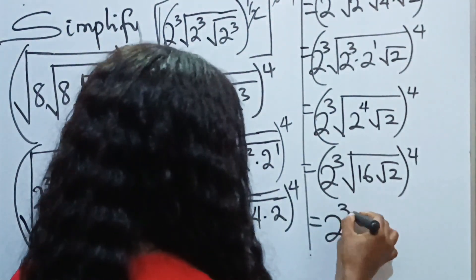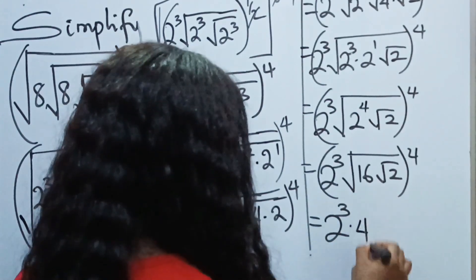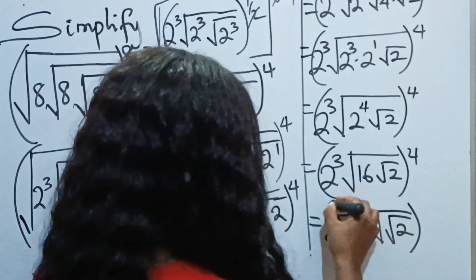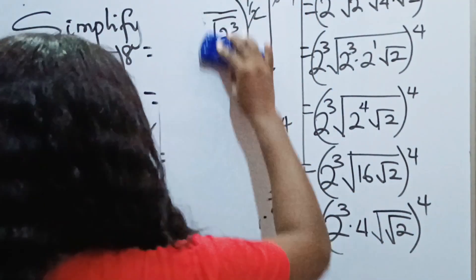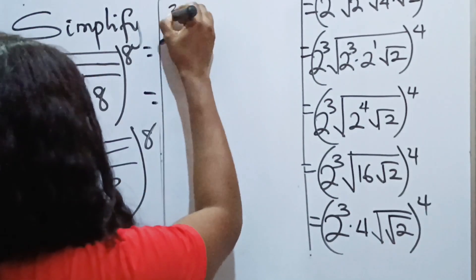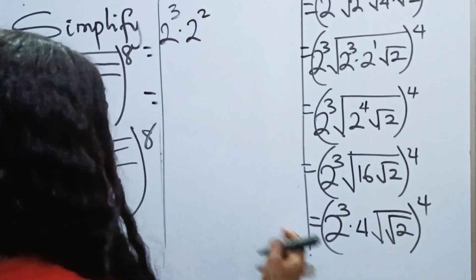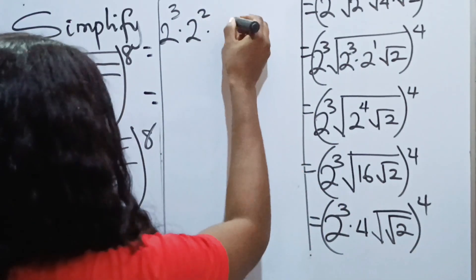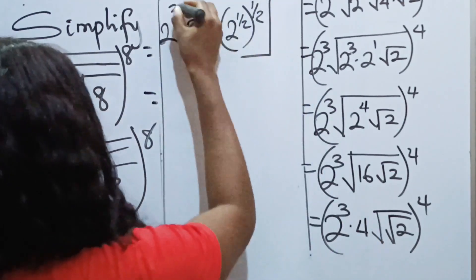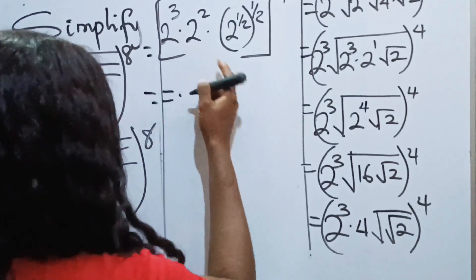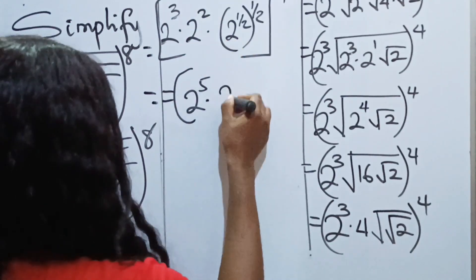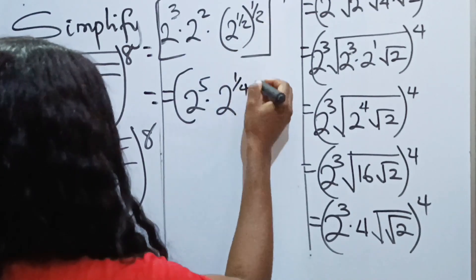Are you enjoying this class? So we have 2 to the power of 3 multiplied by 2 to the power of 2 — that's the square root of 16 simplified — then we have 2 to the power of one half raised to the power of one half, which is the square root of the square root of 2. That gives 2 to the power of one quarter. Then we have the same base, so we pick 2 and add the powers: 3 plus 2 gives us 5, multiplied by 2 to the power of one quarter, with everything raised to the power of 4.